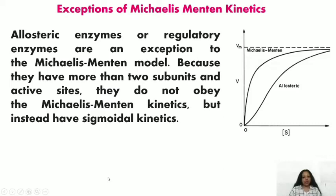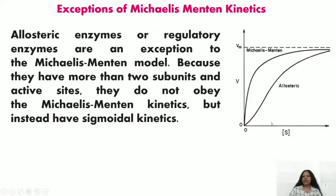There are a few exceptions to Michaelis-Menten kinetics — allosteric or regulatory enzymes. Because they have more than two subunits and active sites, they do not obey Michaelis-Menten kinetics; rather they give sigmoidal kinetics. The parabolic graph is Michaelis-Menten kinetics; the sigmoidal graph is for allosteric enzymes, similar to the cooperative binding seen in hemoglobin.